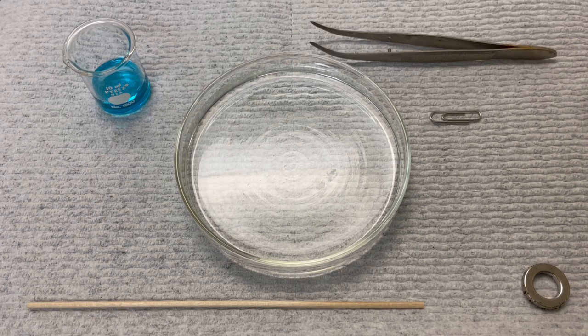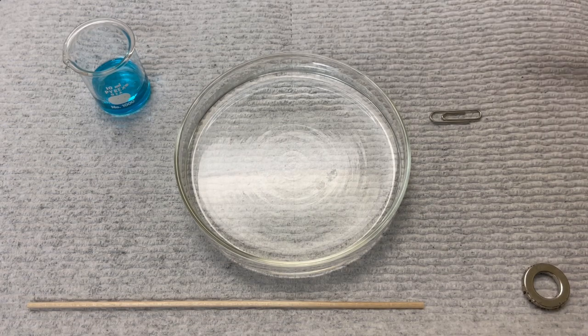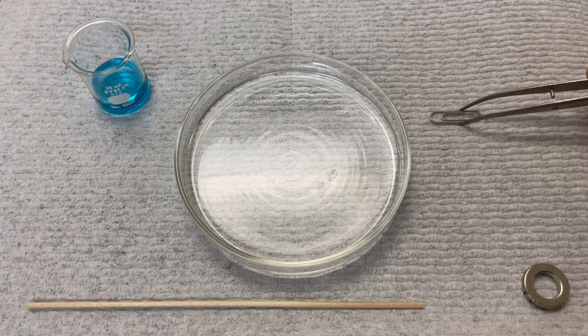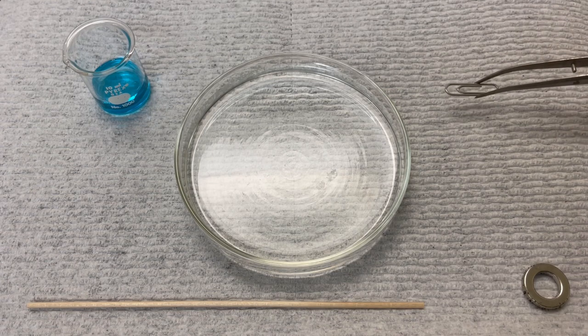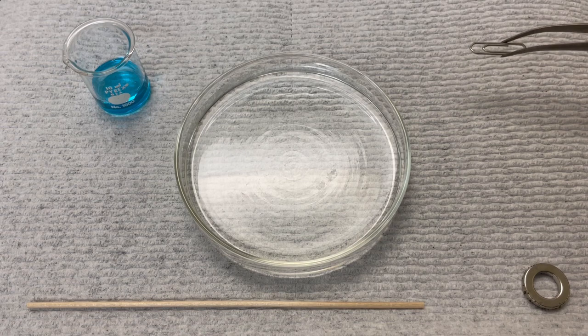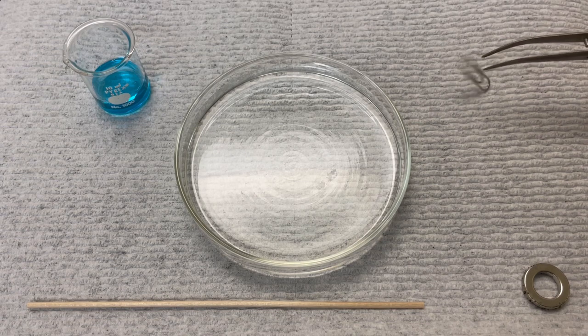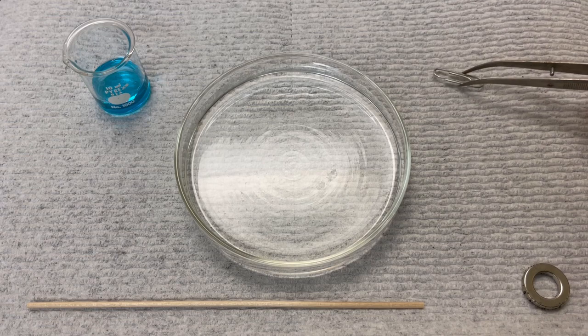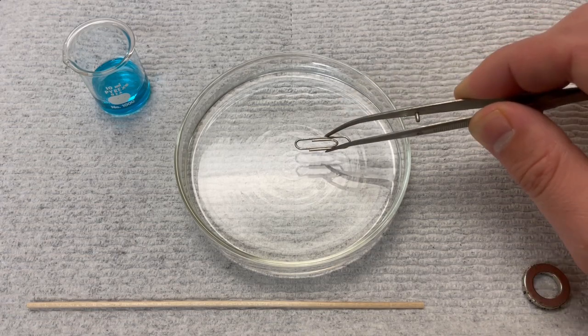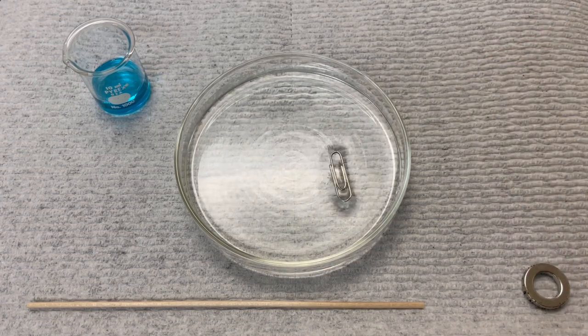What I'm going to do is use these tweezers to pick up this paper clip. This paper clip is made of iron. Iron is denser than water, so we would expect the iron paper clip to sink to the bottom. But if I drop it very carefully onto the surface, it floats.